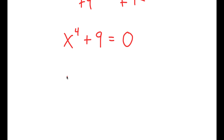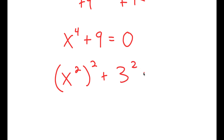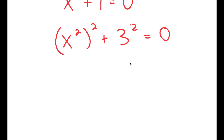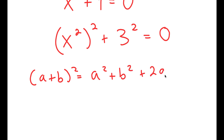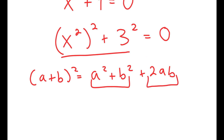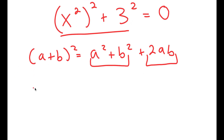Now I'm going to rewrite this as x to the power of 2, to the power of 2, plus 3 to the power of 2, is equal to 0. So now I can use the property that a plus b squared is equal to a squared plus b squared plus 2ab. We can think of a as x squared and b as 3. I already have a squared plus b squared, but I'm just missing the 2ab. So I can say that a squared plus b squared is equal to a plus b squared minus 2ab.